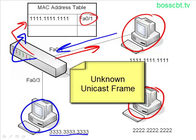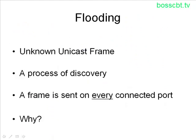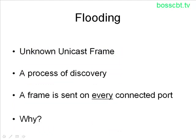An unknown unicast frame is now at the switch, and this leads us into flooding — why we need flooding and what flooding does. An unknown unicast frame is a frame where the destination is not known. The switch needs to come up with a way to address this problem and find that destination. That's where flooding comes in. You can think of flooding as a process of discovery by the switch. When the switch receives that unknown unicast frame, it determines it doesn't know where the destination is, and what it does is send the frame out every interface connected to the switch — it floods it out every connected port.